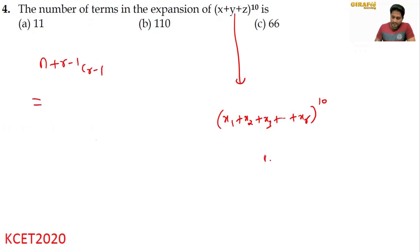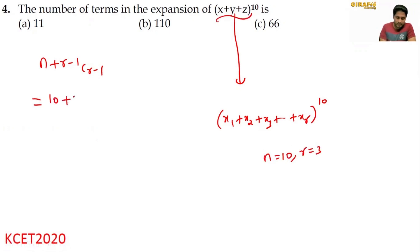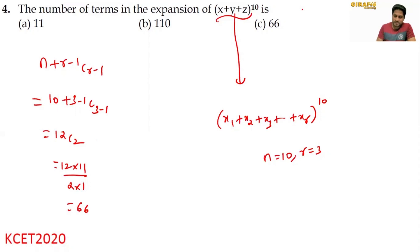You compare: N is equal to 10. As I told you, R stands for number of terms, and X plus Y plus Z has three terms. So this is 10 plus 3 minus 1, C 3 minus 1, that is equal to 12C2. 12C2 is 12 into 11 upon 2 into 1, which is equal to 66 — answer option C.